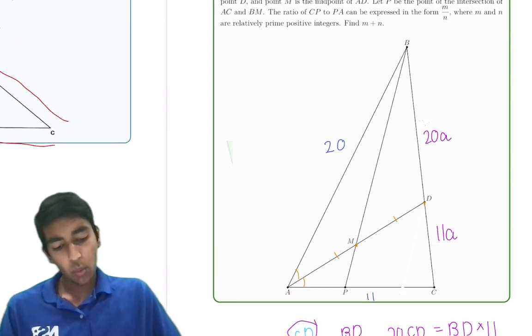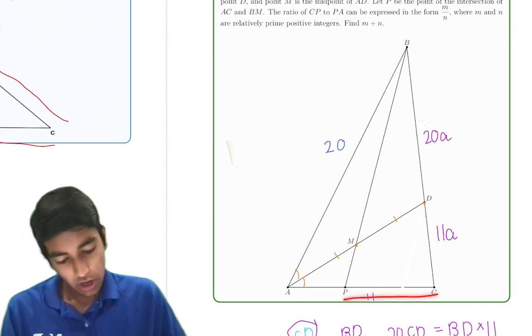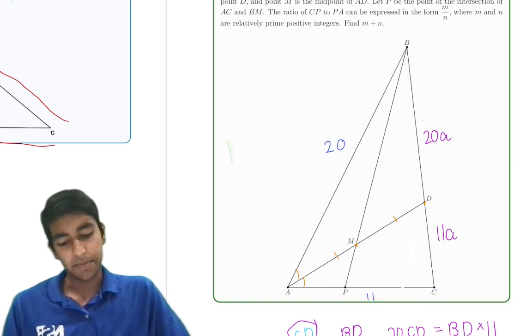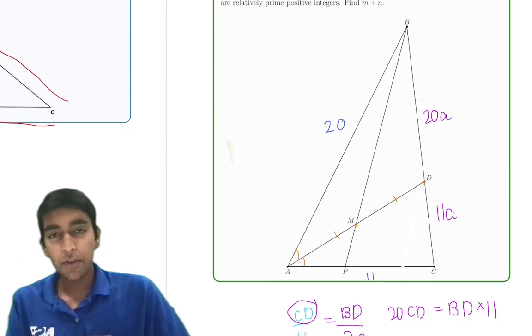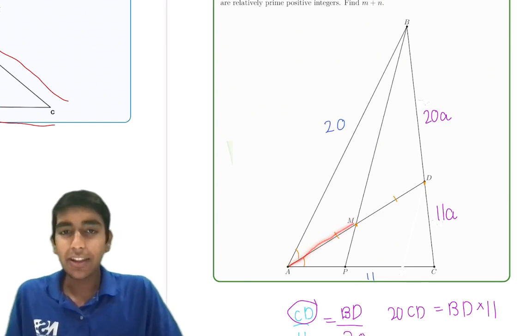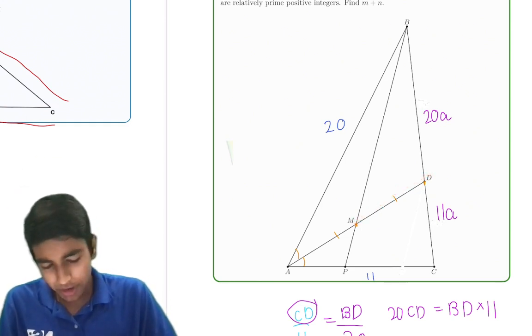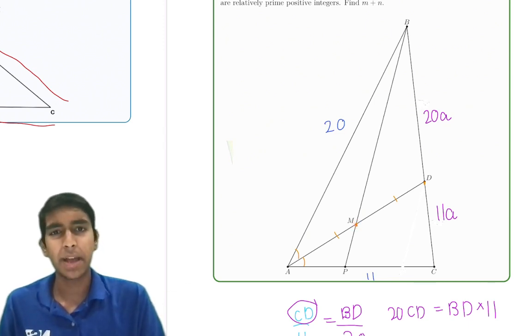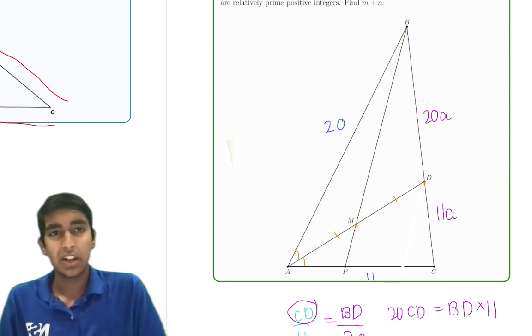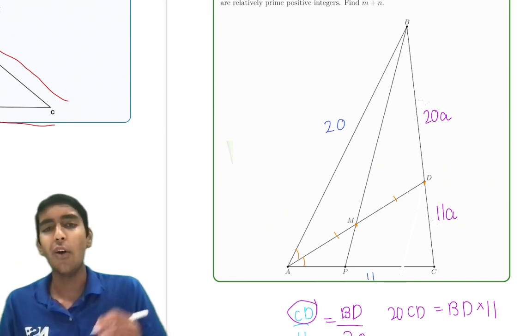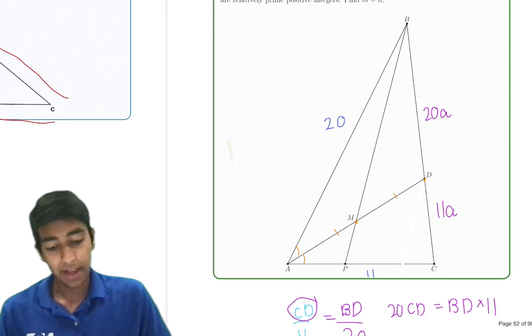But the thing is, we're trying to find CP and PA. We only know CD, DB. Those are definitely not the same things. So we have to try to figure out a way to use the other information in the problem. The main thing that we're not able to use here is this midpoint condition. AM equals MD. What does that really mean? It seems like a midpoint floating in midair. This midpoint is not on a side, it's just on a random angle bisector.